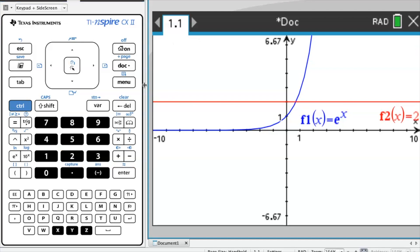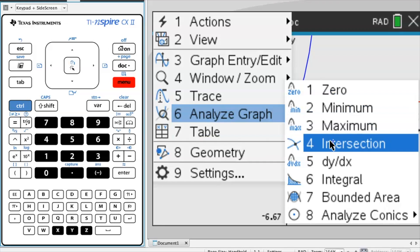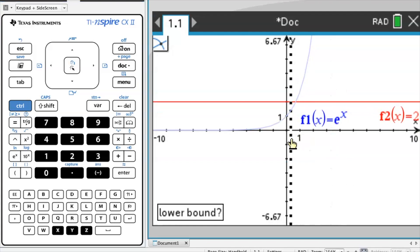So what I would do to find this intersection point is go to Analyze Graph, Intersection, and then I would select the lower bound, select the upper bound, and I will give this as the answer.